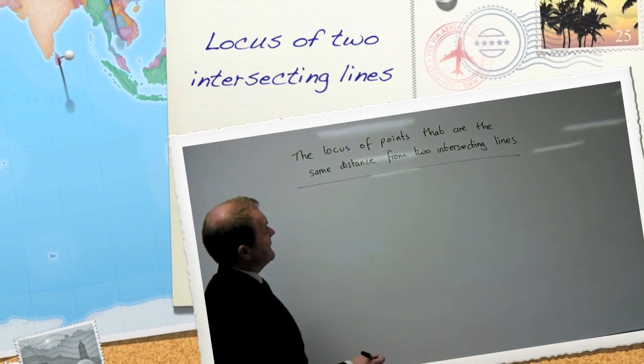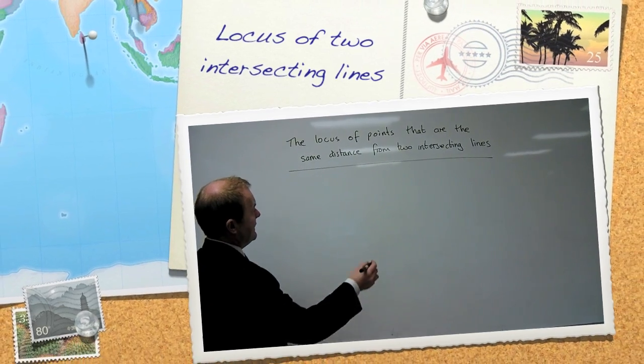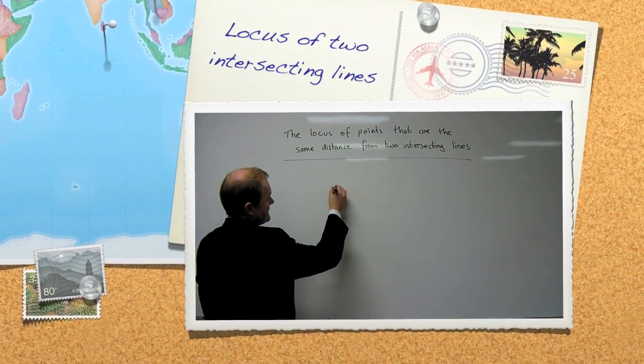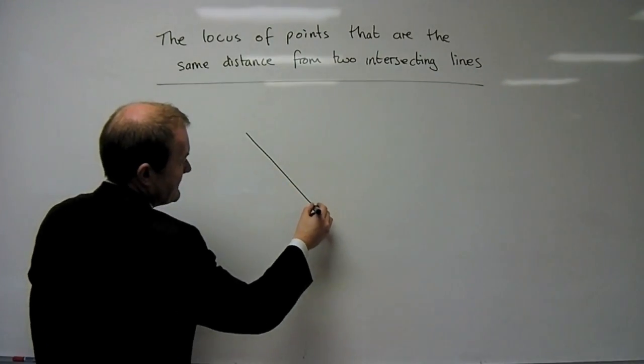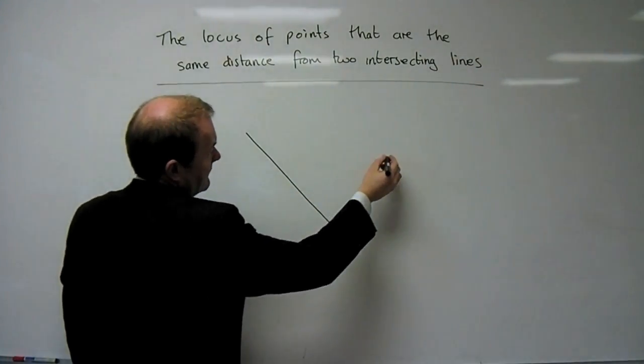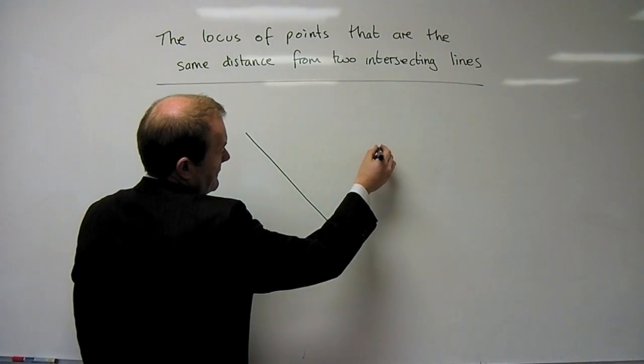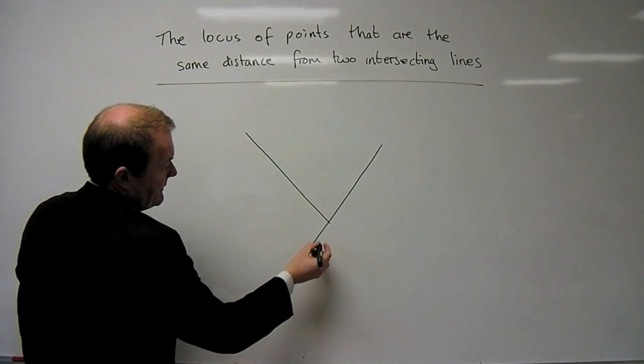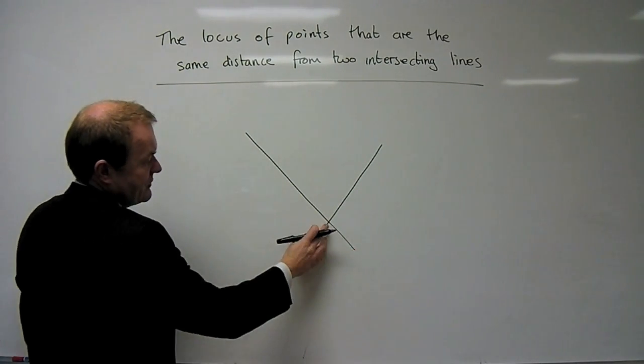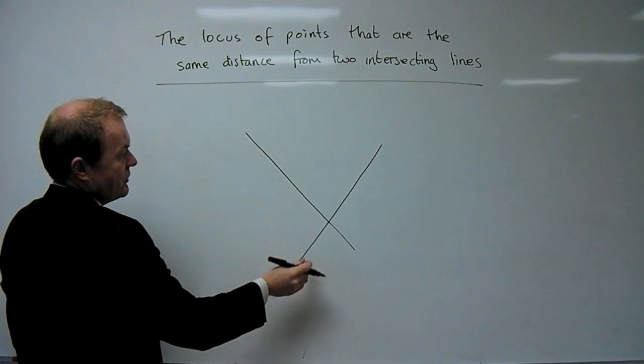So here we're going to look at identifying the points that are exactly the same distance from two lines that are intersecting or crossing. Sometimes the lines will look like they go straight past each other like an X, other times they'll stop where they join.